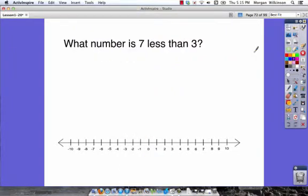What number is 7 less than 3? We could do this problem a couple different ways. One way is we could say 3 minus 7 and figure out our answer that way. Or we could start at 3 and go backwards 7. So we're going to go 1, 2, 3, 4, 5, 6, and 7. You can see our answer is negative 4. So 3 minus 7 equals negative 4. In this one, our minuend is 3, our subtrahend is 7, and our difference is negative 4.